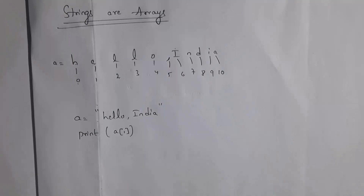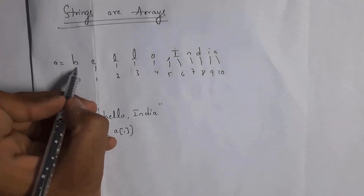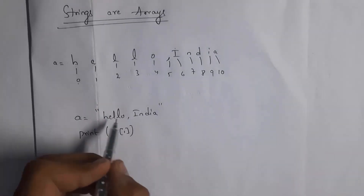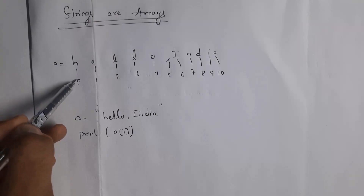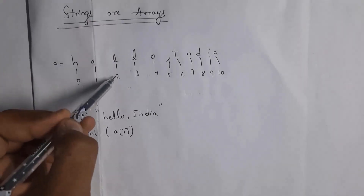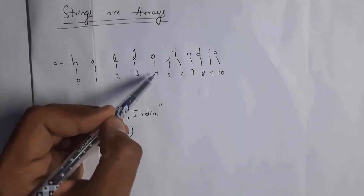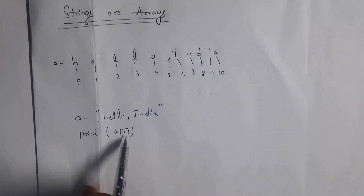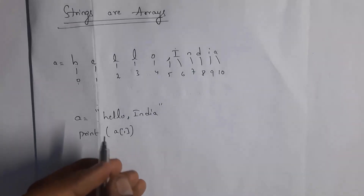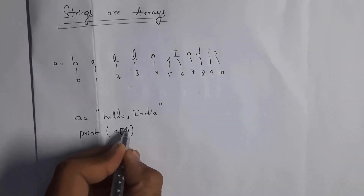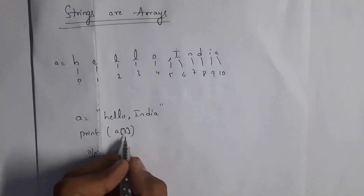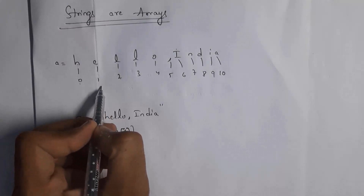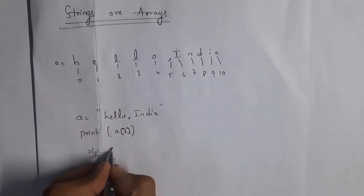Strings are arrays because you can access each character present inside the string by giving an index number. For example, in the string 'hello, India', h is stored at index 0, e at index 1, l at index 2, l at index 3, o at index 4, and comma at index 5. I written print a[1]. Whatever character is at index number 1 will be generated as output — that is e. So I will get output e.